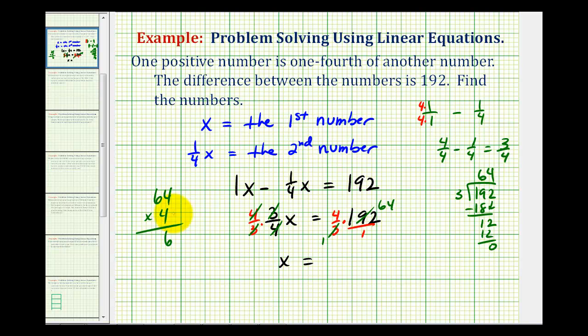That would be sixteen—carry the one. There's twenty-four plus one, there's twenty-five. So x is equal to two hundred fifty-six, which would be the first number.